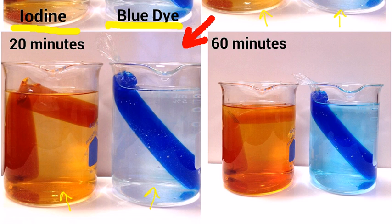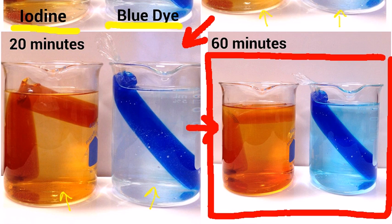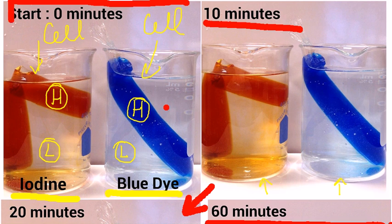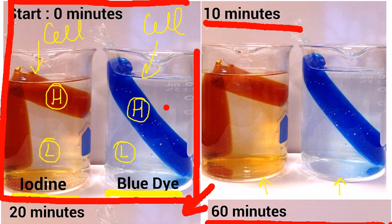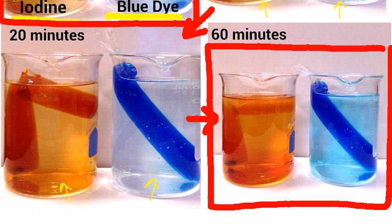And then after 60 minutes, we'll notice that there's a drastic difference. So if we compare the beakers after 60 minutes in color with the beakers at the start at zero minutes, we can see that the color of the water outside of the cell was clear, just as water is. And then after 60 minutes, they turned darker orange and a nice blue color.